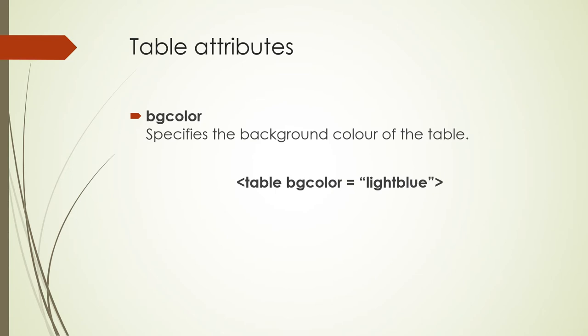The next table attribute is bgcolor. BG stands for background, so this specifies the background color of the table — for example, bgcolor equals light blue. Again, you can change this to various colors.